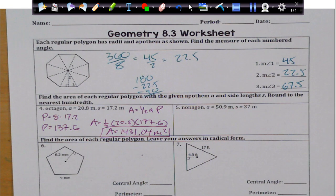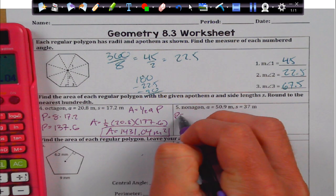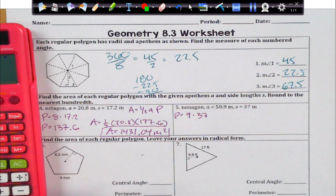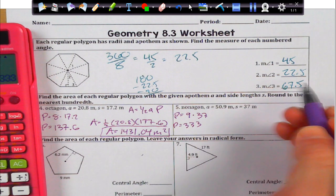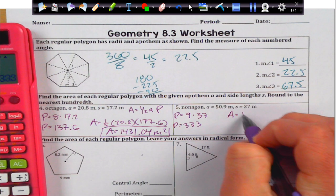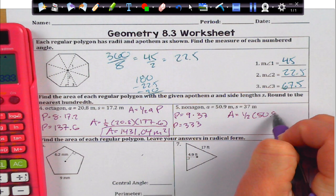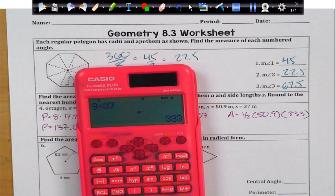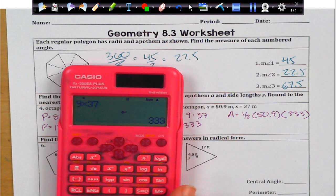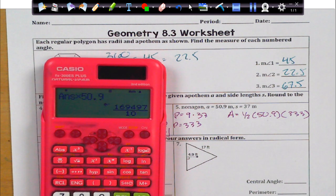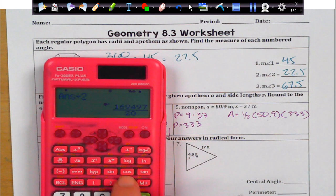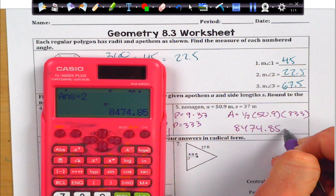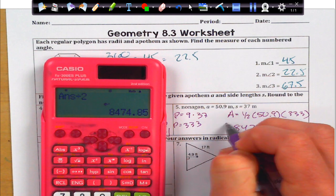Number 5, a nonagon is a nine-sided polygon. So, for my perimeter, I'm going to do 9 times 37, and that's going to be a perimeter of 333. So, my area is going to be 1 half, my apothem of 50.9 times the perimeter of 333. I already have 333 in there from 9 times 37, so I've just got to multiply by 50.9 and then divide by 2. So, that leaves me with my answer of 8474.85, and that's going to be also in square meters.